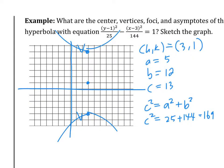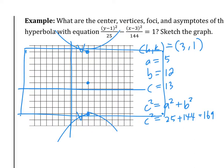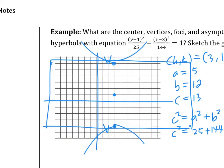We want to graph this hyperbola entirely, so we want to draw our asymptote — that has to do with the box. Starting from the vertex, go 12 to the right and 12 to the left. Draw a box going through your vertex, then draw the diagonals through the corners of the box. That has to go through your center.